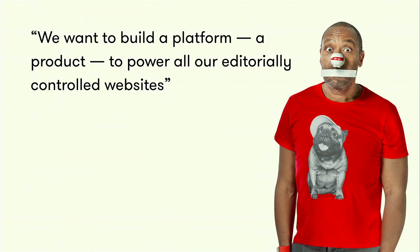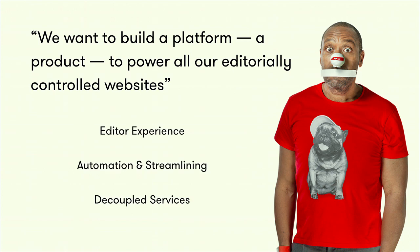So when we started our Red Nose Day campaign for 2017, we started differently. We wanted to build a platform — a product — to power all our editorially controlled websites. It's a very different thing to think about something like that than to build a website. We don't want to build a website; we want to build a product to power all our campaigns coming in the future. And we want to really focus on three main components — three main streams of work that I think are vital to build such products.